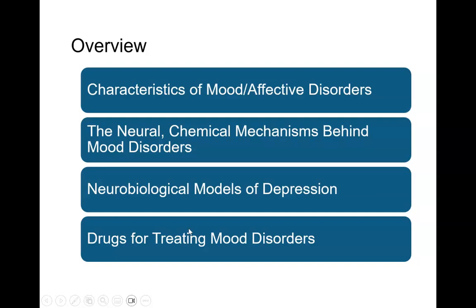Here's our overview for what we're going to be talking about today. We're going to talk about the characteristics of mood disorders, also known as affective disorders — affective with an A. We'll talk about neural and chemical mechanisms behind mood disorders, neurobiological models of depression, and then finish up by talking about the various drugs used to treat mood disorders.